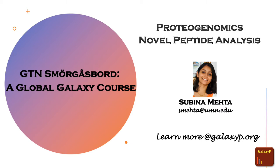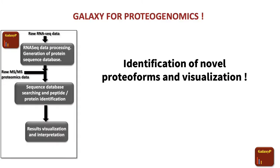In this video, I am going to cover the third part of the proteogenomics tutorial, which is the novel peptide analysis. In the previous proteogenomic tutorials, we covered the generation of a protein sequence database from RNA-seq data. We performed proteogenomic database searching using mass spectrometry data, which led to distinct peptide identifications not present in the reference database.